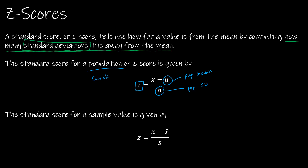The z represents our standard score or z-score, and X is the observed value — the value that we're testing. For a sample instead of a population, we use lowercase letters for those statistics. Remember: population uses parameters, sample uses statistics. So X-bar is the sample mean and S is the sample standard deviation.